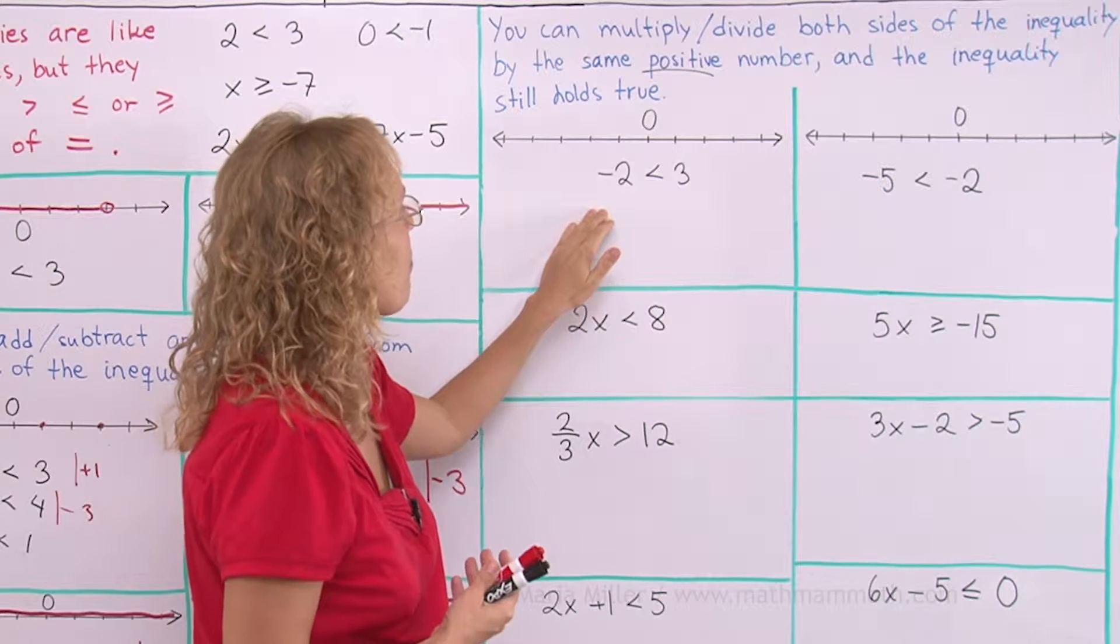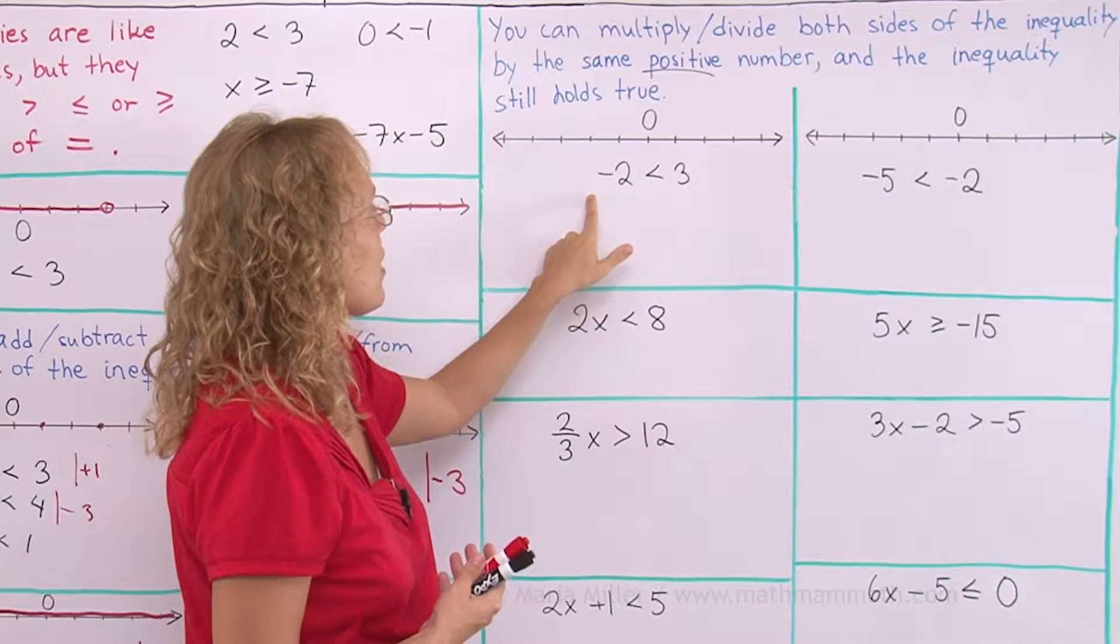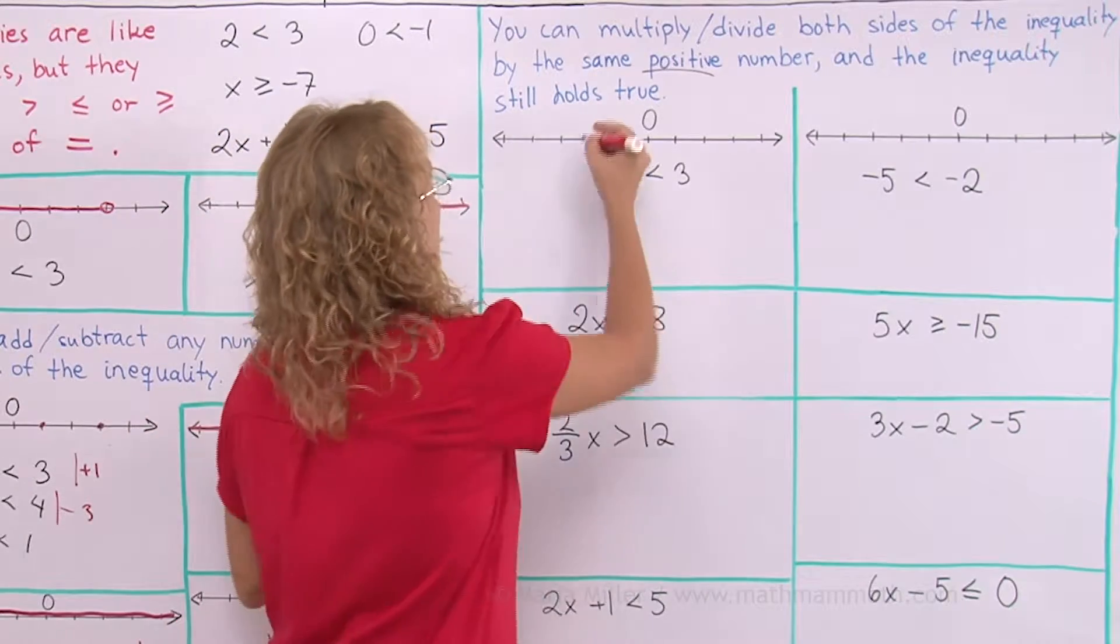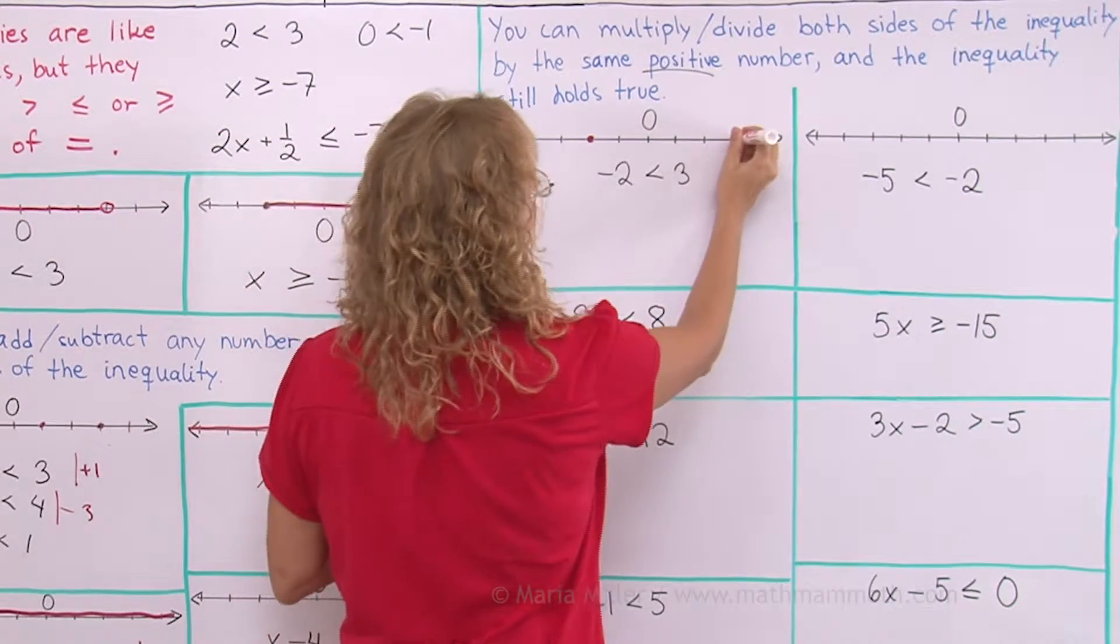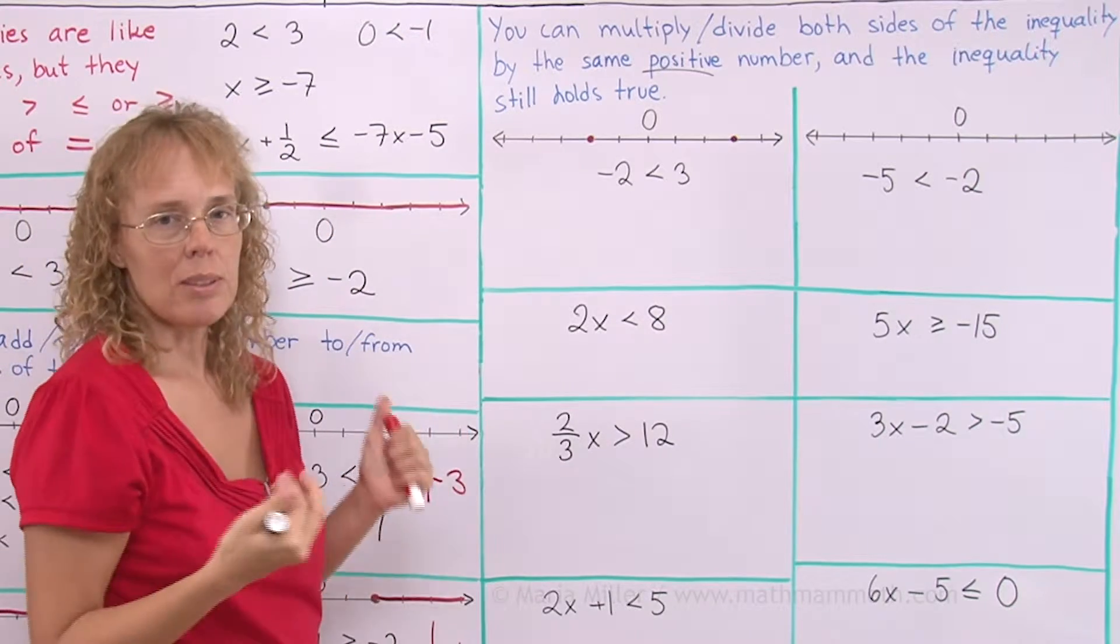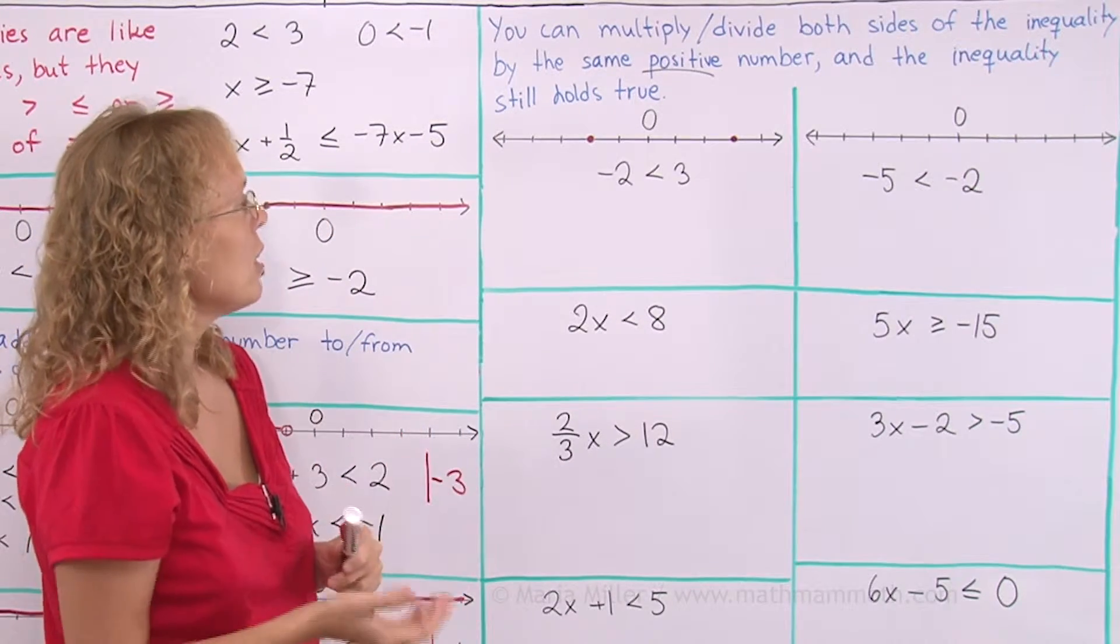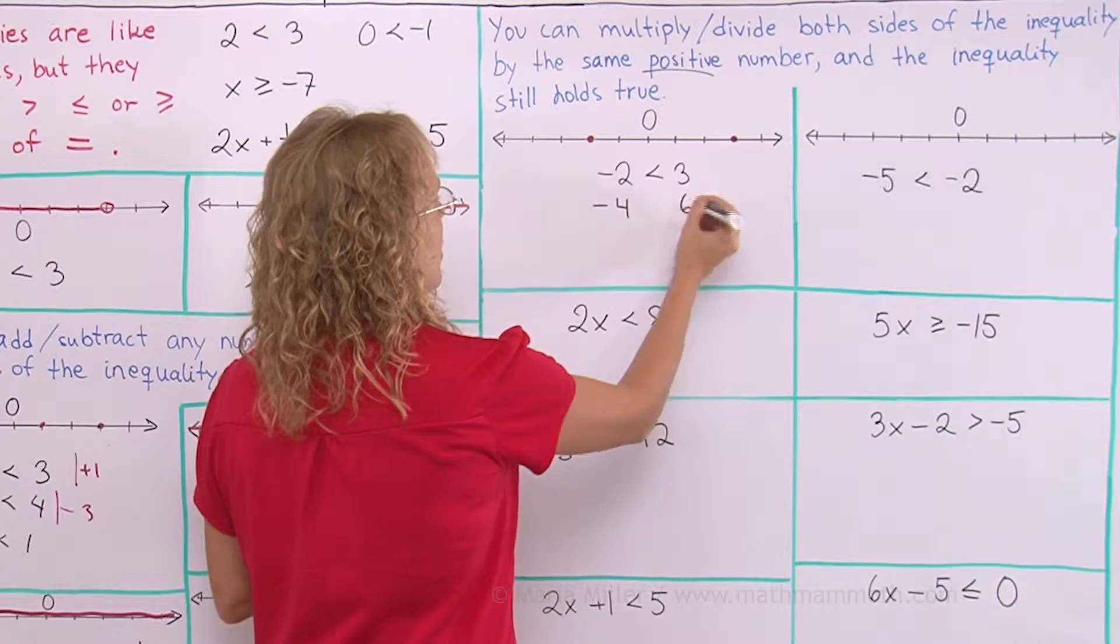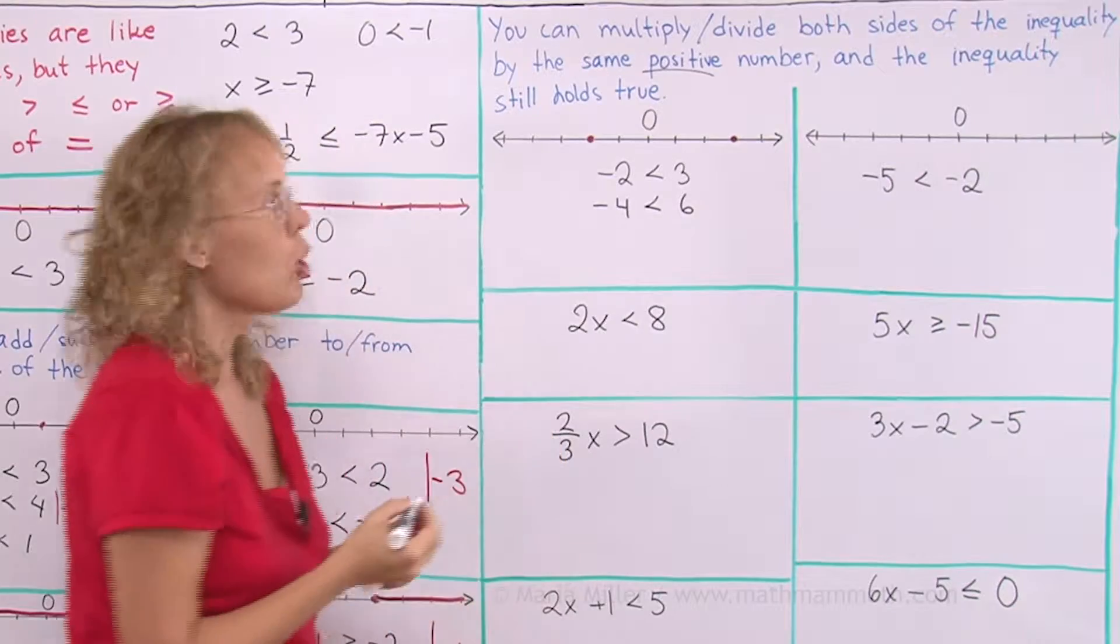Let's say we have an inequality, and here's negative 2 is less than 3. Negative 2 is here and 3 is here. Then if I multiply both sides of this by some positive number, let's say I multiply both by 2, then I would get negative 4 and 6. And yes, the inequality still holds.